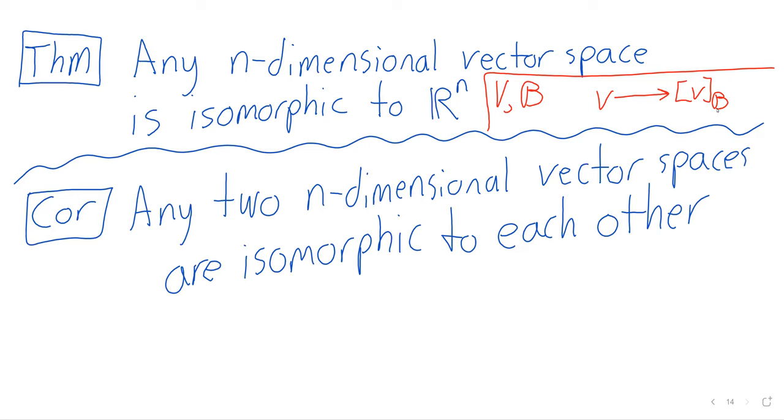So this section then sort of seeks to kind of drill home or drill down on this theorem. For example, suppose you have a vector space V and a vector space W.